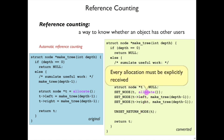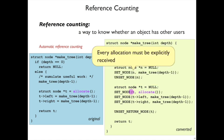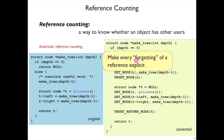Every allocation needs to be explicitly received with setNode. Here and here, for example, we have to make the forgetting of our reference explicit. Note that in this code, we didn't have any local variables for makeTree.